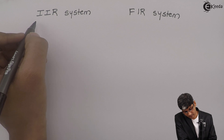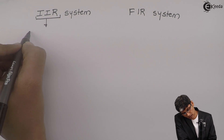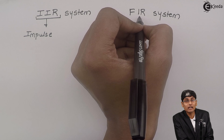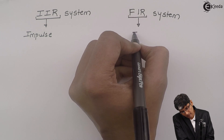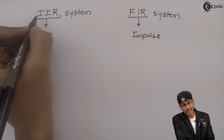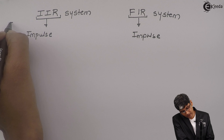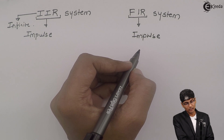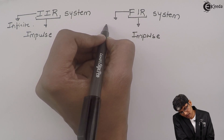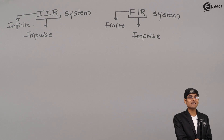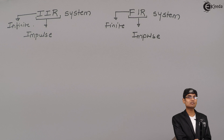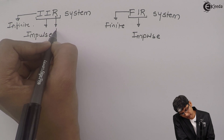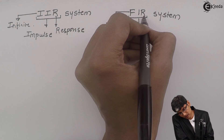An IIR system is an acronym. The first I stands for infinite, the second I stands for impulse, and R stands for response. Similarly, FIR: F stands for finite, I stands for impulse, and R stands for response. In both situations, R stands for response.